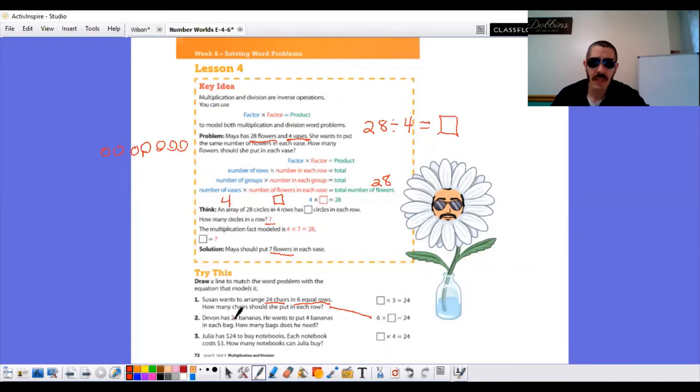Two, Devin has 24 bananas. There's our total. Again, that's our total for all three. So we need to go further than that. He wants to put four bananas in each bag. How many bags does he need? So the bags would be the number of groups, unknown, unknown. So it's one of these two. There's four bananas in a bag. So there's four in each group. That one has three, that one has four, and there it is.